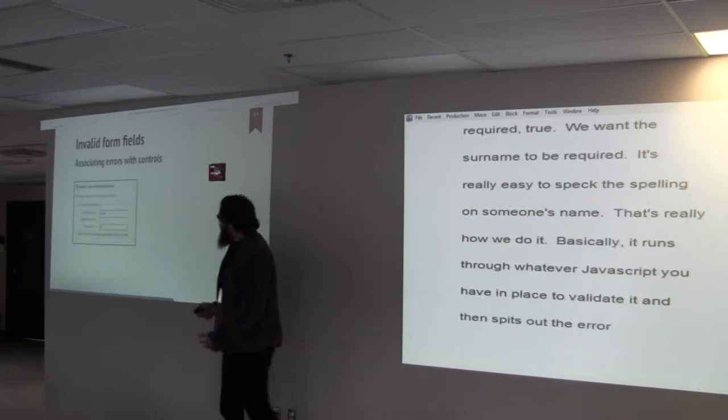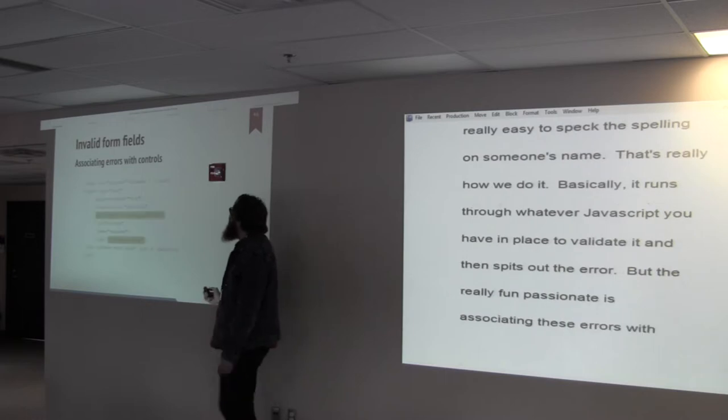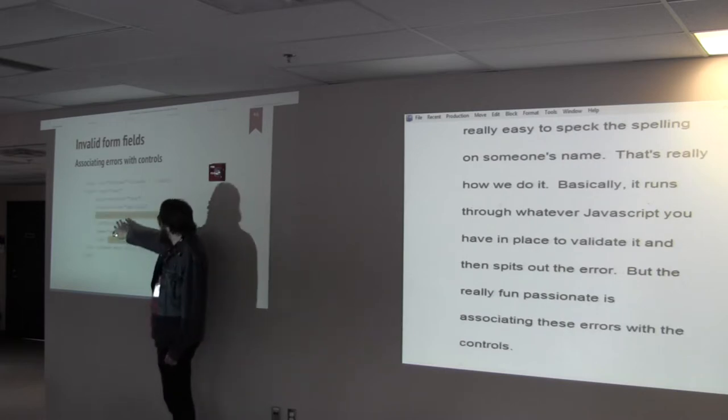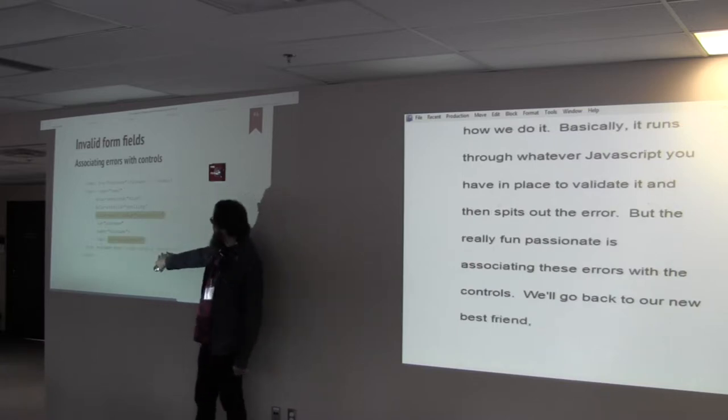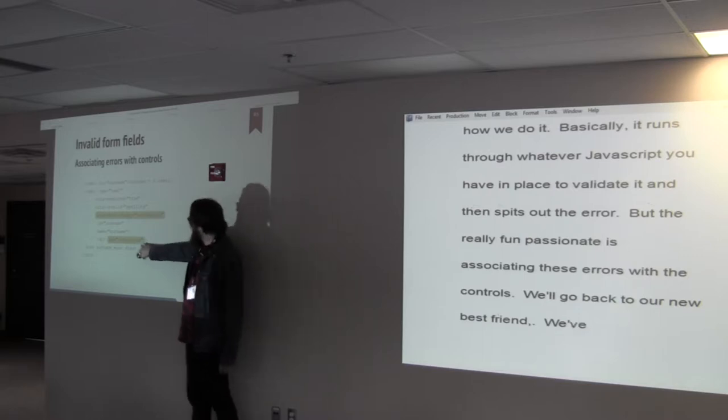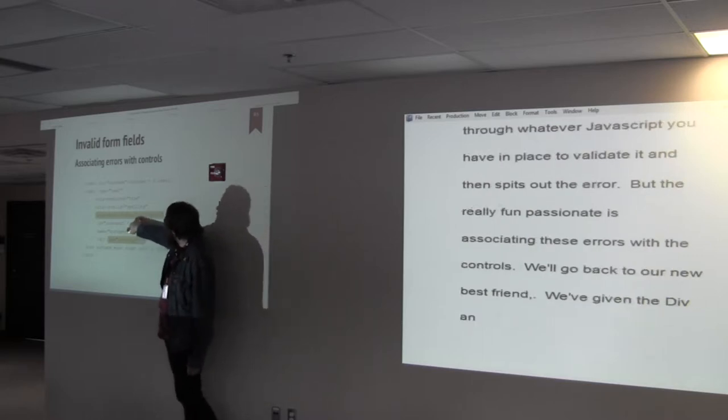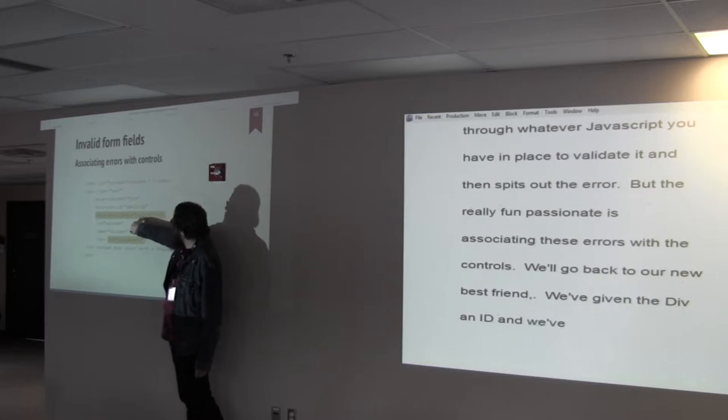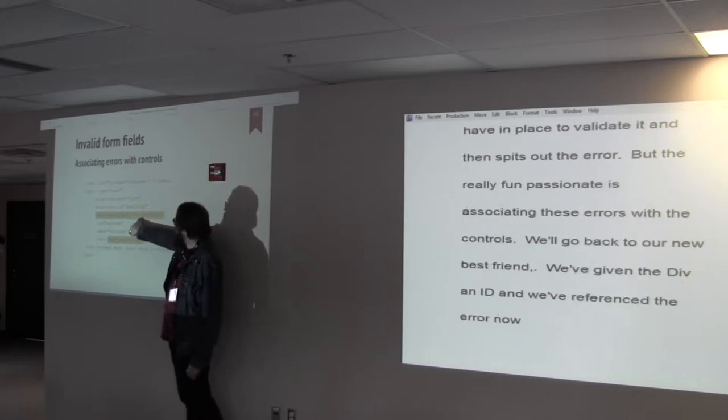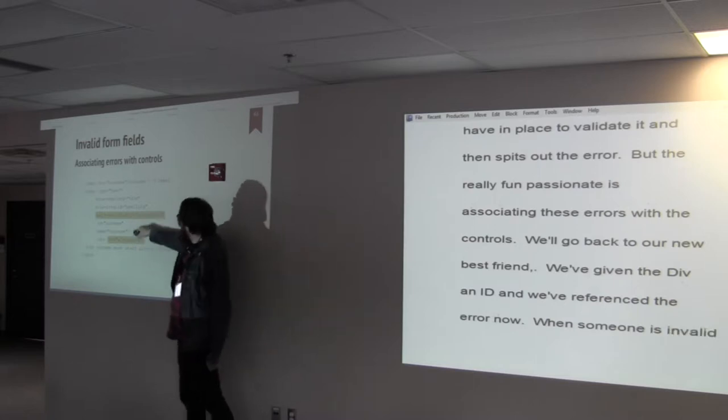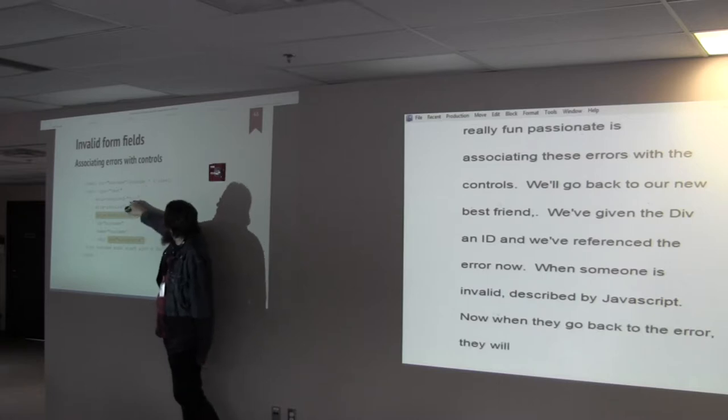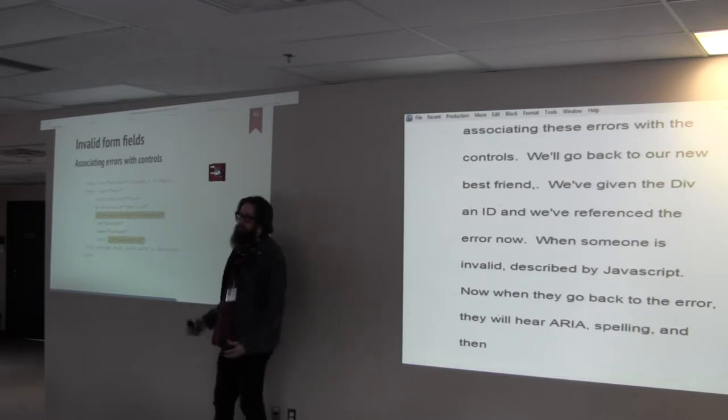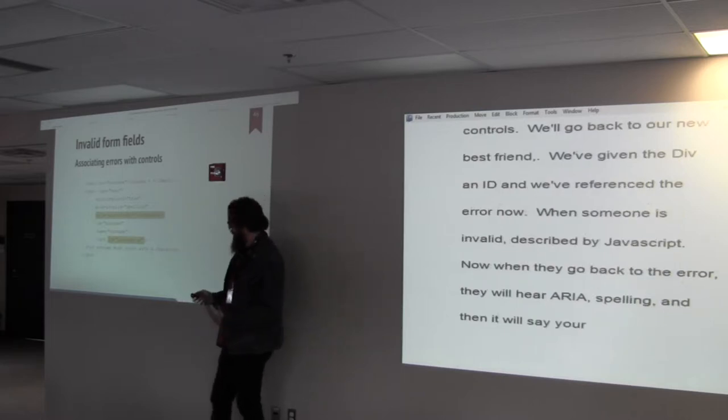Now, let's see how we're going to handle these errors. It's pretty easy. We've got ARIA required equals true. ARIA invalid. We've got spelling on this. And then the rest of the validation. So basically, it runs through whatever JavaScript you have in place to validate it. And then it spits out the error. But the really fun part is associating these errors with the controls. We're going back to our new best friend, ARIA described by. Again, we've given the div that contains our error, the paragraph, we've given that an ID. And you've referenced the error now that'll pop up when something's invalid. We'll add this ARIA described by to JavaScript. So now, when they go back to that error, they'll hear ARIA invalid spelling. And then it'll say, your surname must start with an S. So now we've bound this error message to the input.